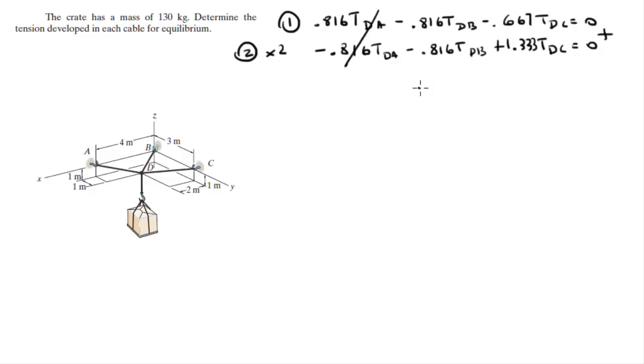And you get 0.667 TDC is equal to 1.632 TDB, but we already found TDC in the equation before, so you just replace it over here, and you solve for TDB, and you get that TDB is equal to 521.2 N.